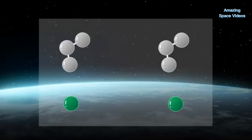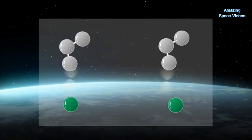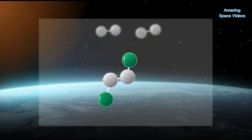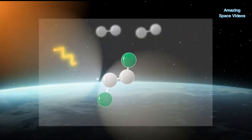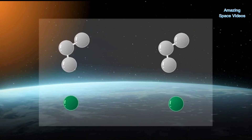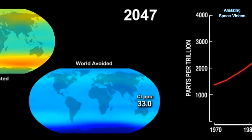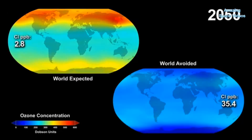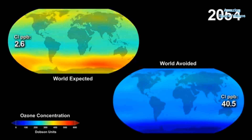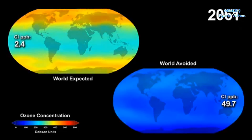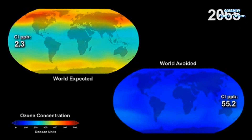One chlorine atom can destroy thousands of ozone molecules, and millions of tons of CFCs were pumped into the atmosphere from the 1920s through the early 1990s. As CFC concentrations in the atmosphere continue to decline, the ozone hole is expected to gradually become less severe, and scientists expect the Antarctic ozone to recover back to healthy levels around the year 2070.